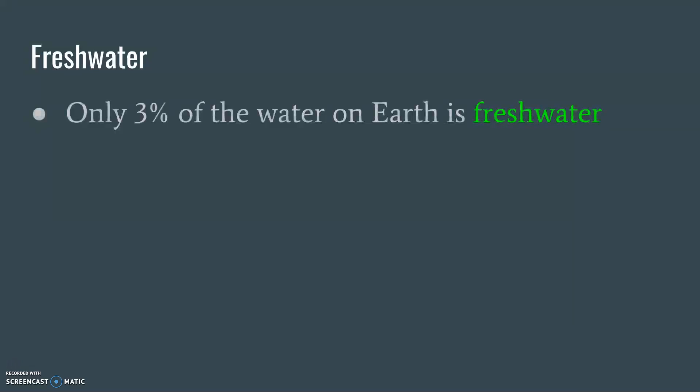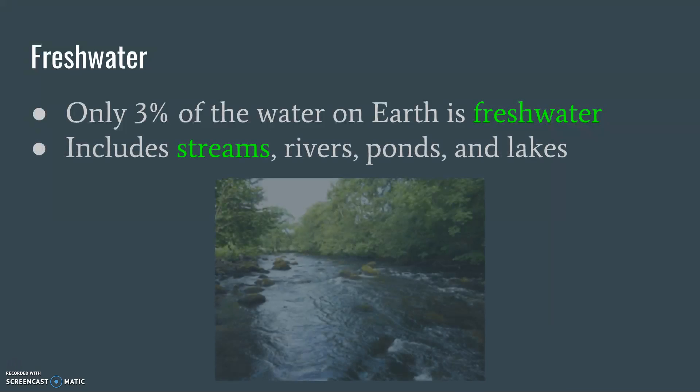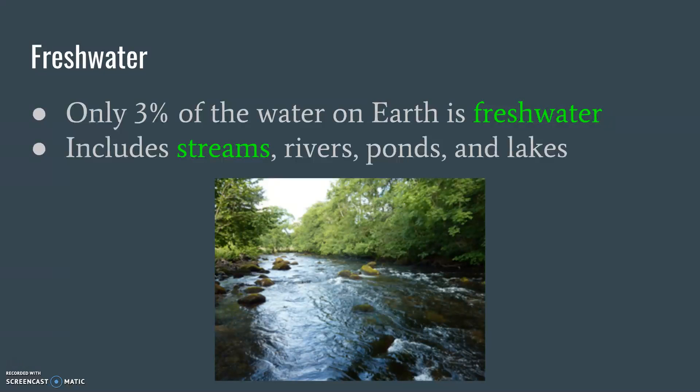Only about 3% of the water on Earth is freshwater, which means not salty. This includes streams, rivers, ponds, and lakes. Lake Anna is freshwater — it's not salty. All of the little streams, rivers, and creeks that lead up to Lake Anna are freshwater areas.